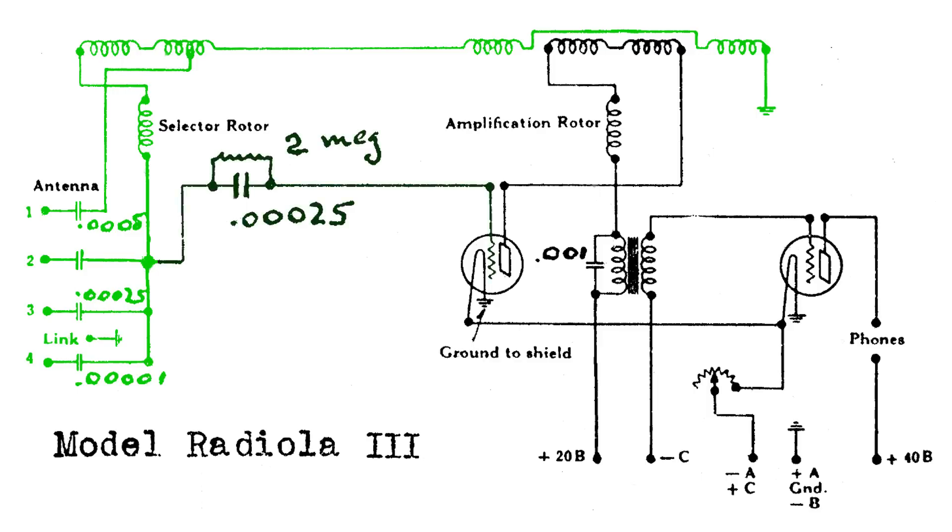This tuned signal gets applied to the grid of the WD-11. This tube amplifies it, comes out of the plate, goes up to a couple of coils. That's more of the feedback circuit.